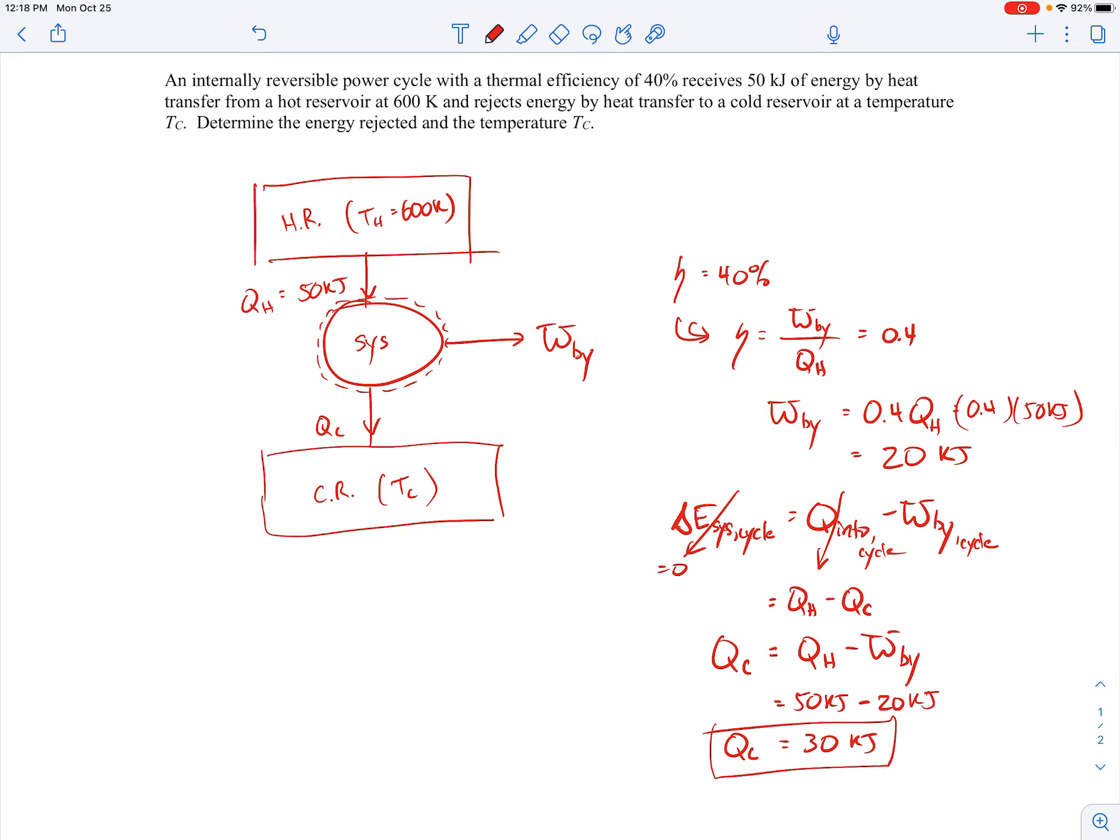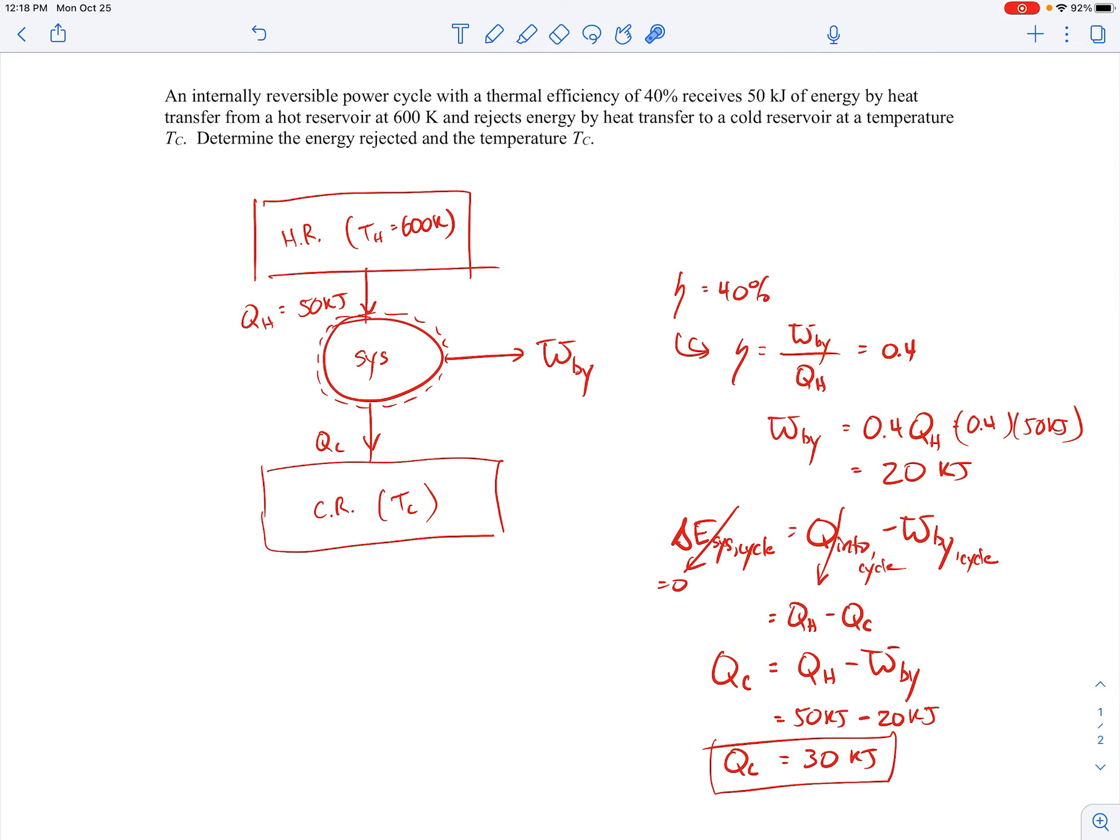Okay, so that's the first part. And then we're asked to find the temperature TC. Well, to find the temperature TC, I'm going to make use of this information here that we're told that it's an internally reversible power cycle. So I know that the efficiency will be a maximum efficiency, which is the reversible efficiency, which is 1 minus TC over TH, where those are the absolute temperatures.